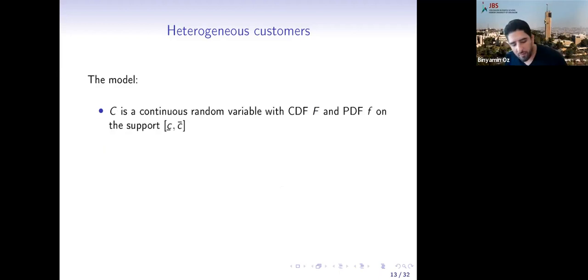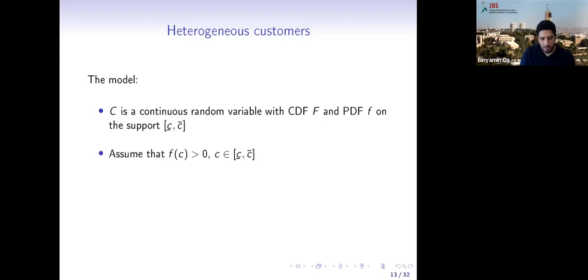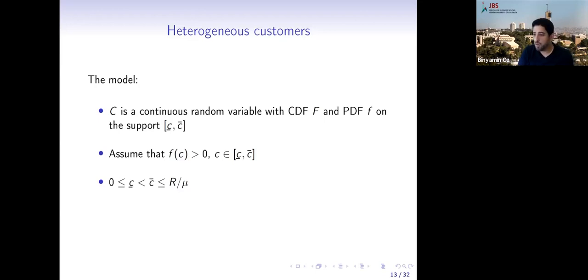Our model is the same M/M/1 as described, but now c is a continuous random variable with CDF F and PDF f, supported on some interval [c_low, c_high], with strictly positive density throughout. We assume the highest value c_high is less than r·μ, so even the patient with the highest cost would join if they were the only one in the system.